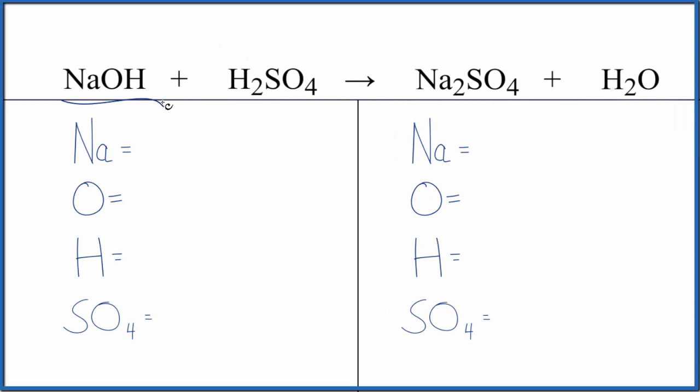Let's balance the equation for NaOH plus H2SO4. This is sodium hydroxide. This is sulfuric acid. We'll also look at the type of reaction and the states.